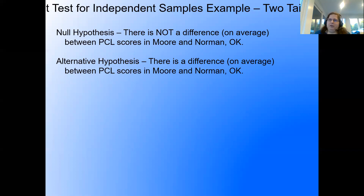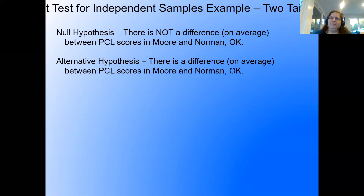Had this been a two-tailed setup — had we said 'different' — we could have said: there is a difference on average between PCL scores in Moore and Norman, Oklahoma (alternative), and there is not a difference on average between PCL scores in Moore and Norman, Oklahoma (null). You can also pull the phrase exactly from the problem setup.